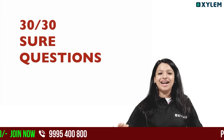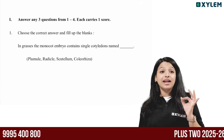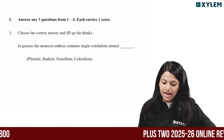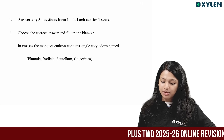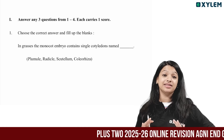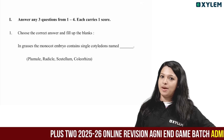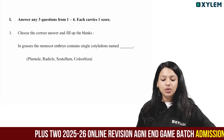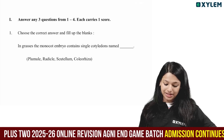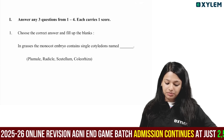Now let's go to the first question. Answer any three questions from one to four. You guys have one more question in the NCERT textbook, you can answer any questions. That's a great question. Choose the correct answer and fill in the blank.